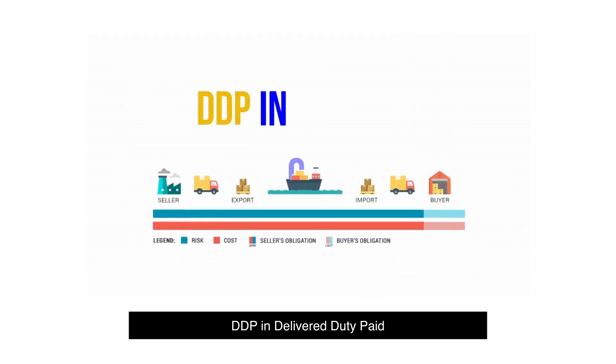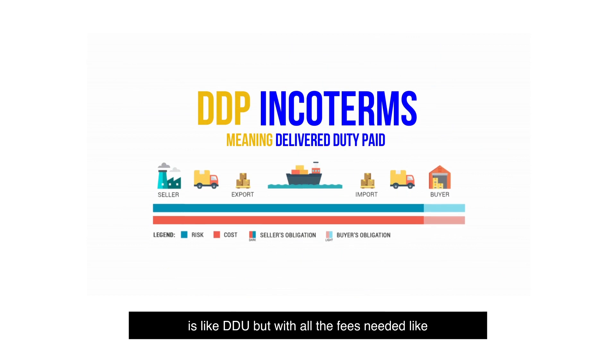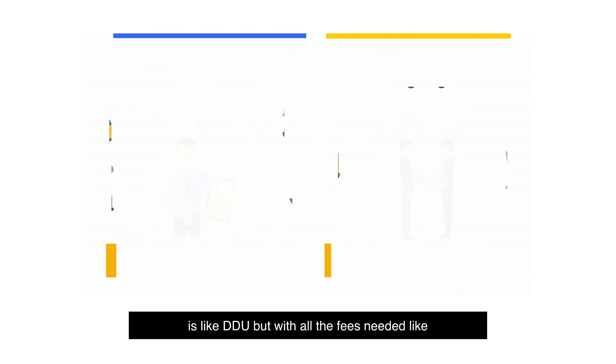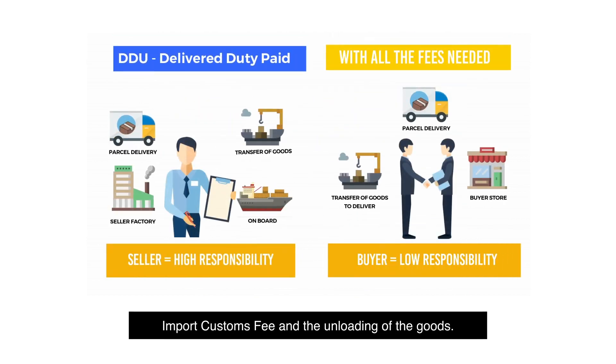DDP, or Delivery Duty Paid, is like DDU but with all the fees included, like import customs fees and the unloading of goods.